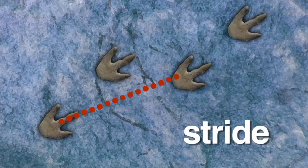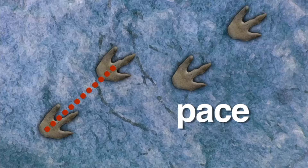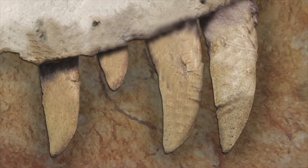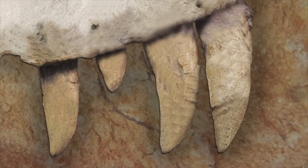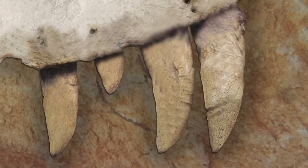Stride is the distance from one footprint to the other footprint made by the same foot. Pace is the distance from one footprint to the next footprint made by the opposite foot. By measuring stride and pace, scientists can determine how fast the animal was walking or running. Here's a fossil of dinosaur teeth — notice they are pointy and sharp. Fossil teeth can tell scientists what a dinosaur ate.